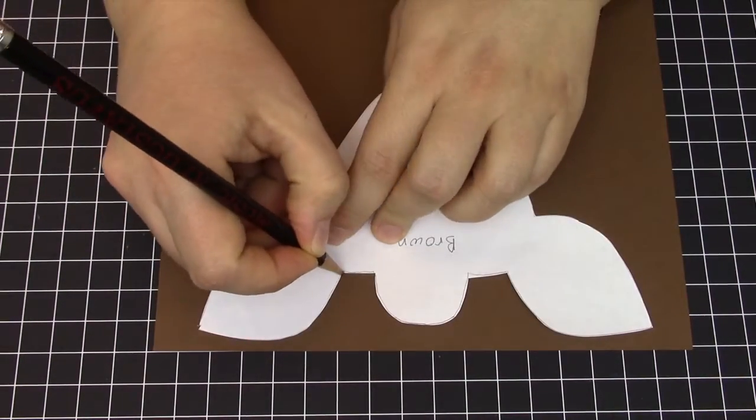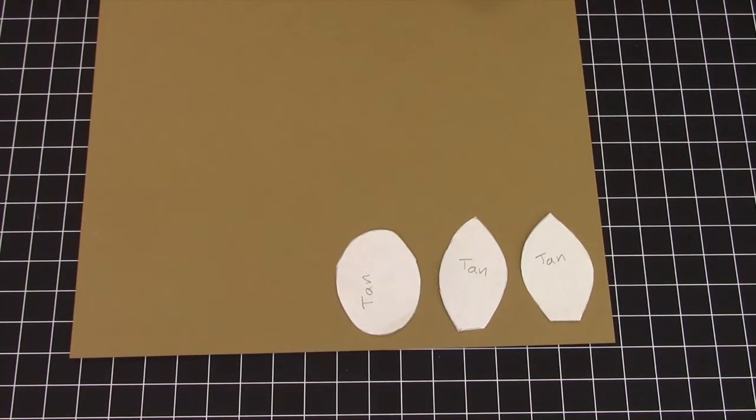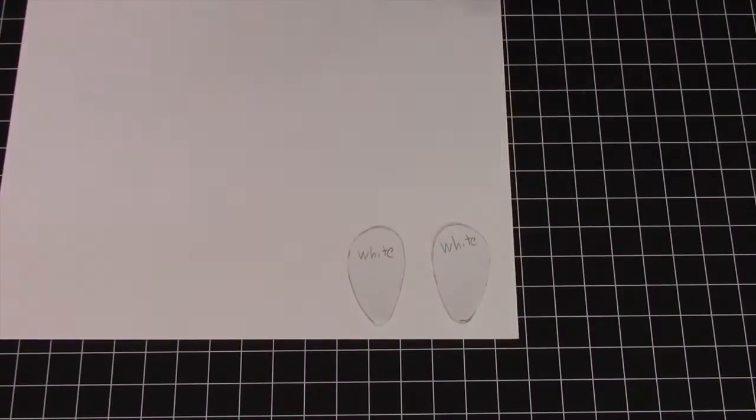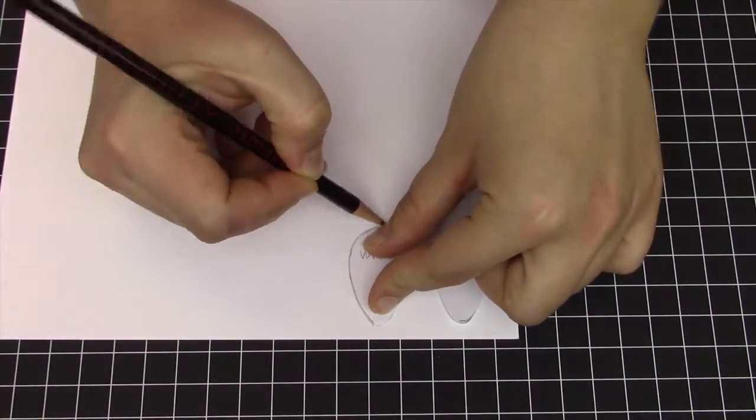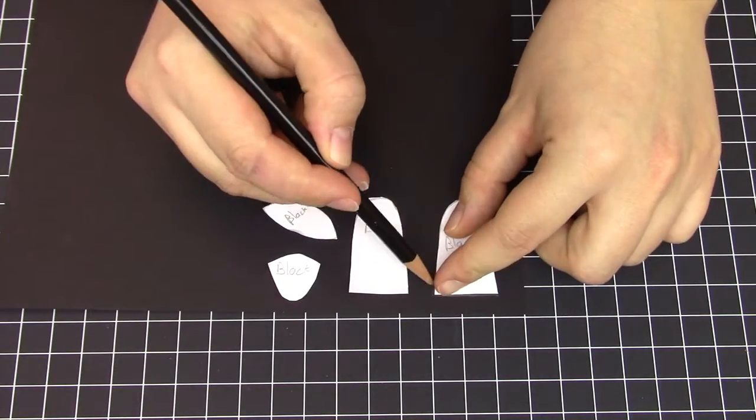Take the large deer head and trace it onto the brown construction paper. Also trace the two pointy teardrops and the round circle onto the tan paper. The white teardrops will be the eyes, and we'll have the black antlers as well as the pupils.